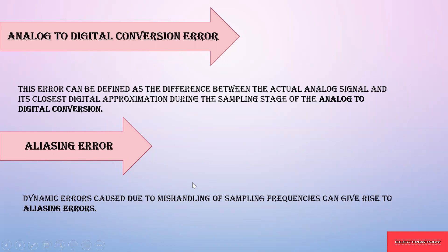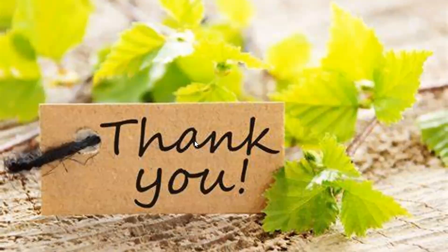Finally, aliasing error is a dynamic error caused due to mishandling of sampling frequency. For example, if a frequency is 50 Hz and it keeps increasing in different forms, dynamic errors occur in the sensor because of incorrect human handling of the sampling frequency. That is known as aliasing error. Hope you have understood the different standard deviations of sensors and also the characteristics of sensors. Stay tuned for more information. Thank you.